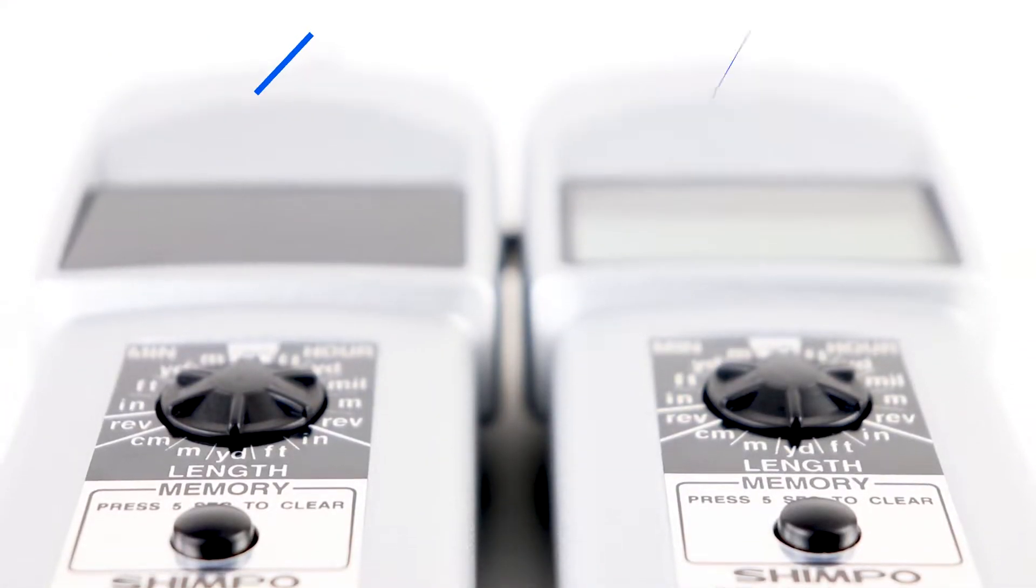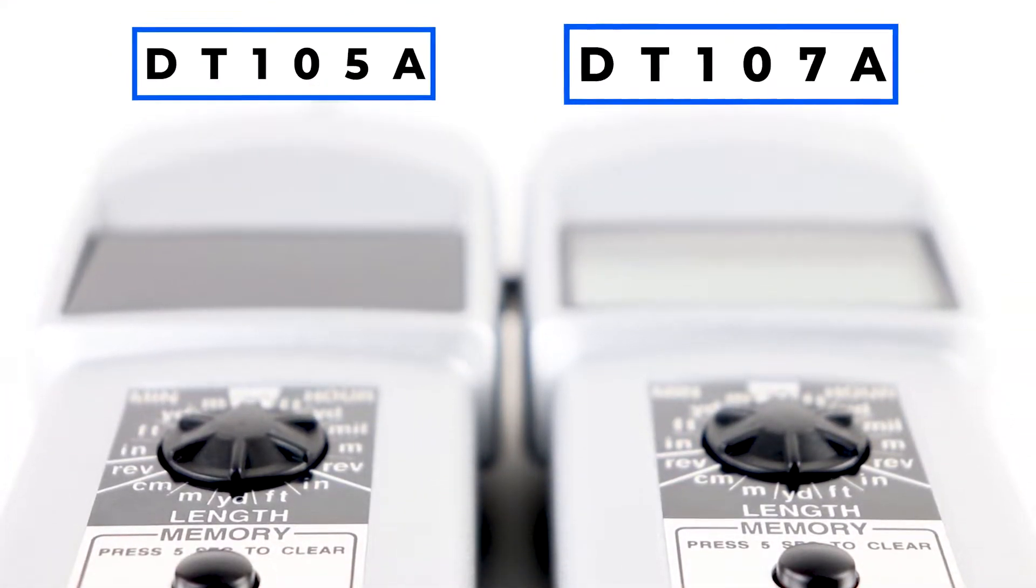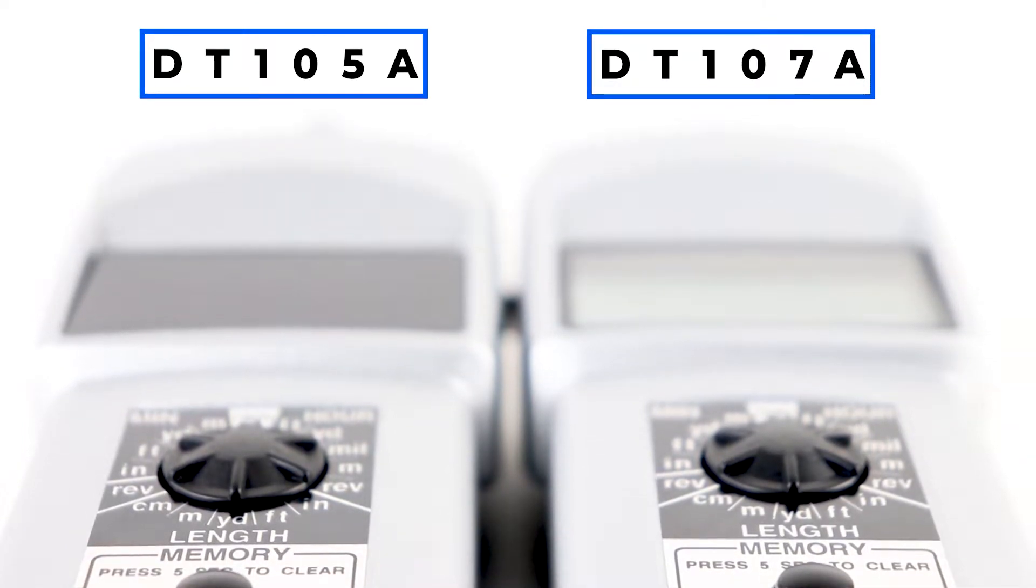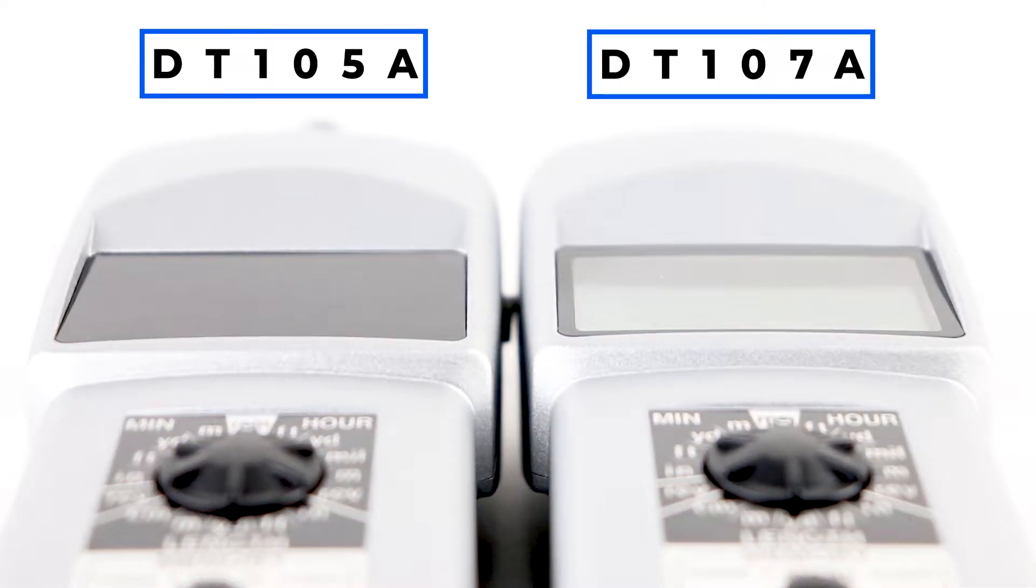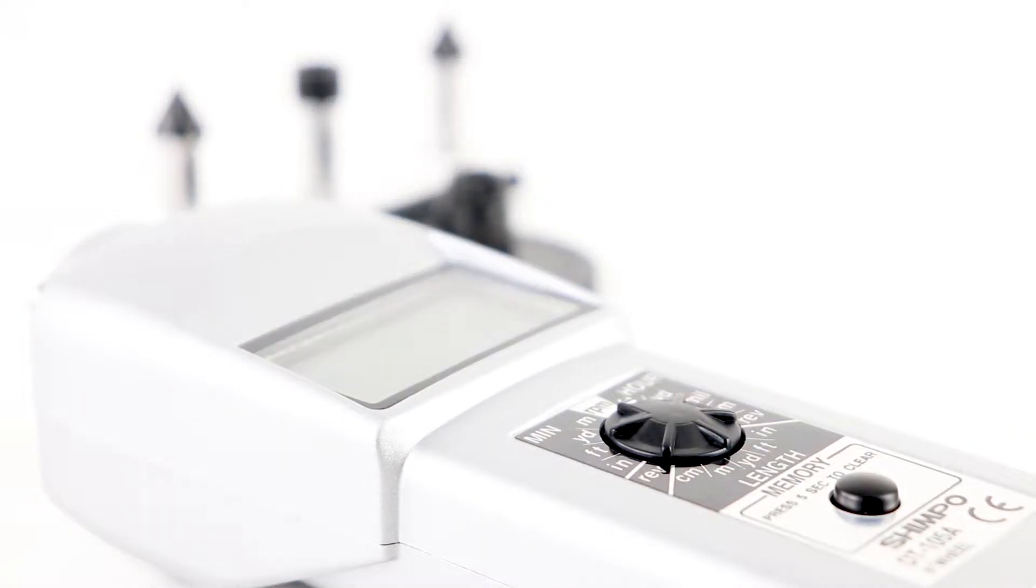SHIMPO's DT105A and DT107A handheld contact tachometers are designed to accurately measure rotation speeds, surface speeds, and length.